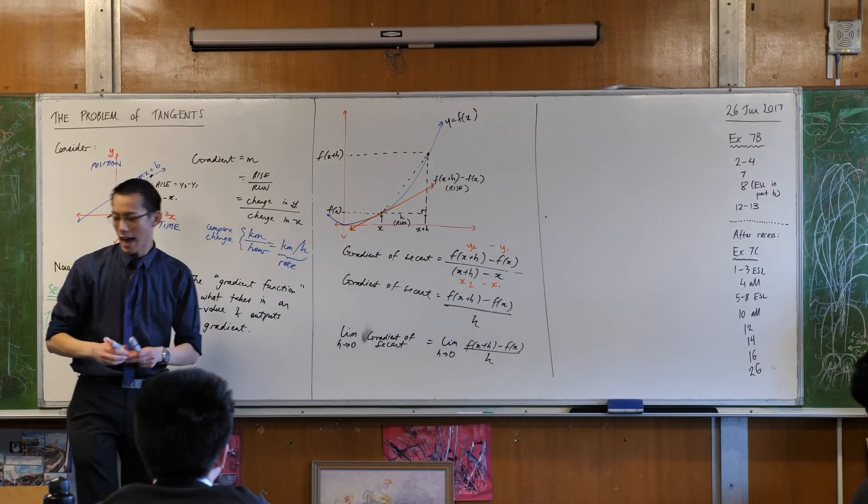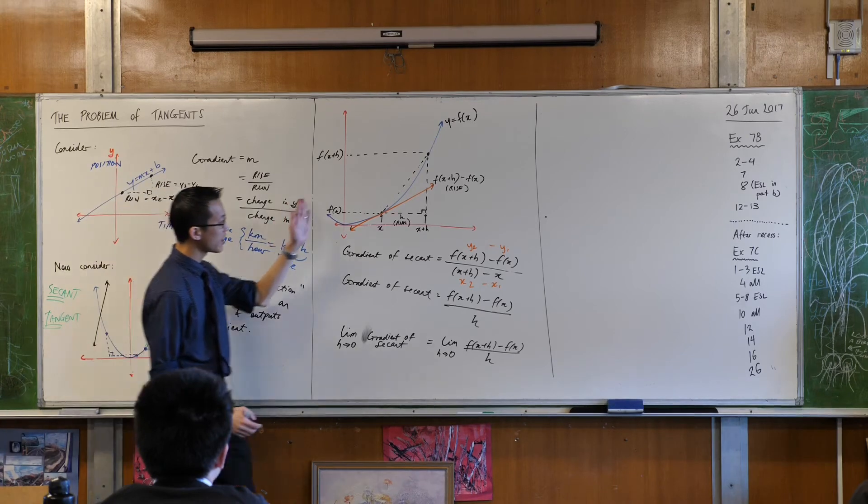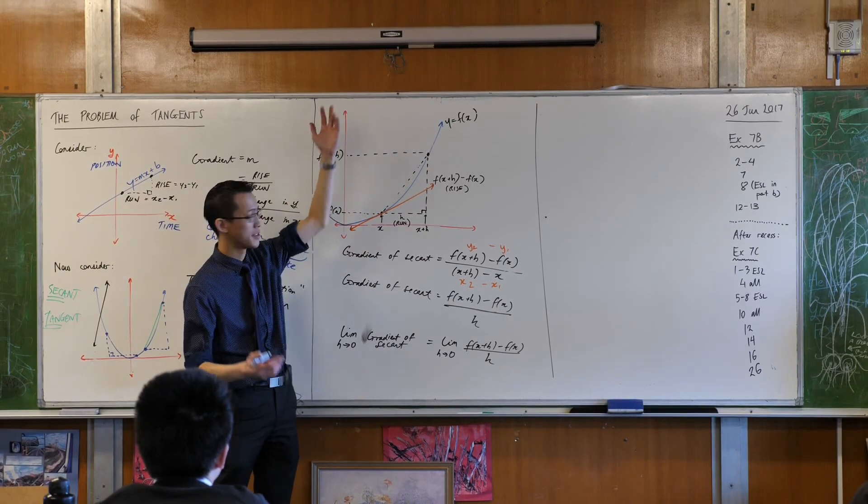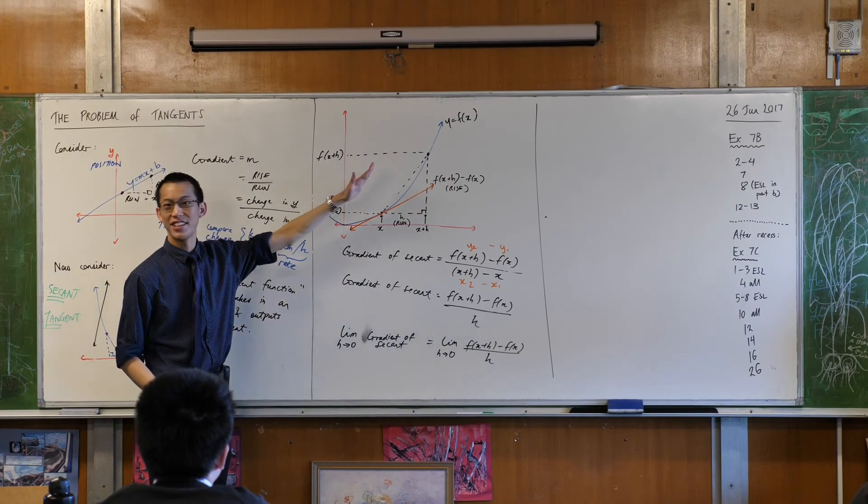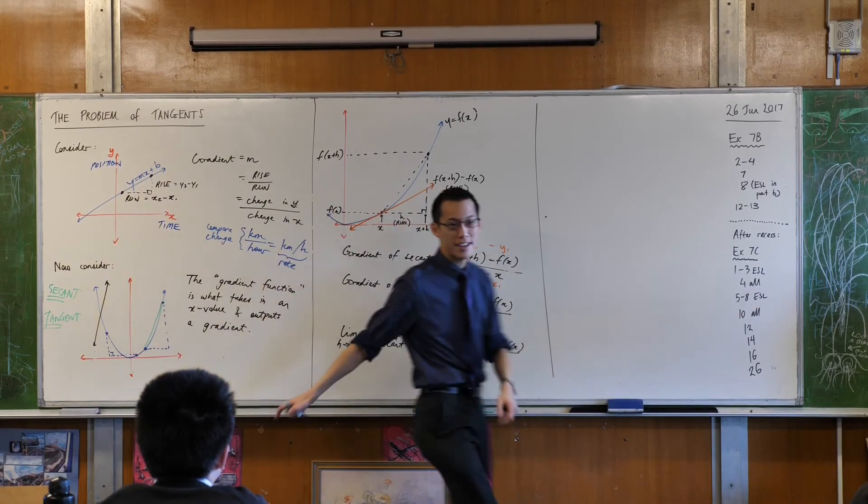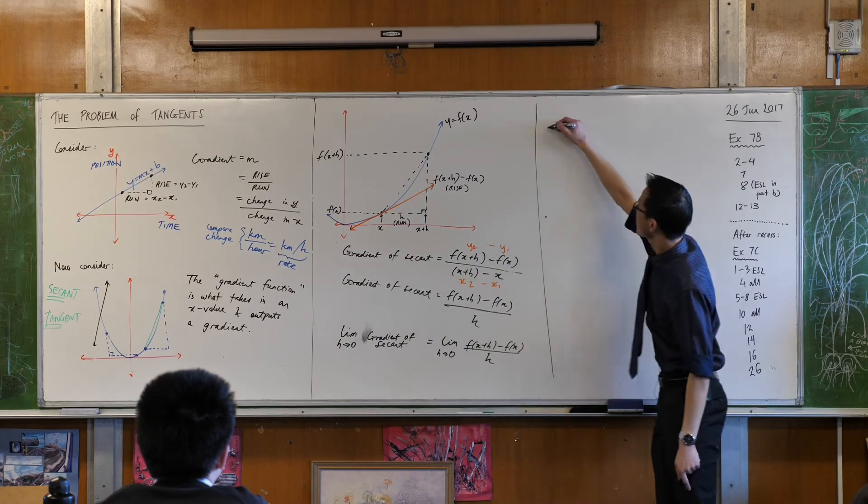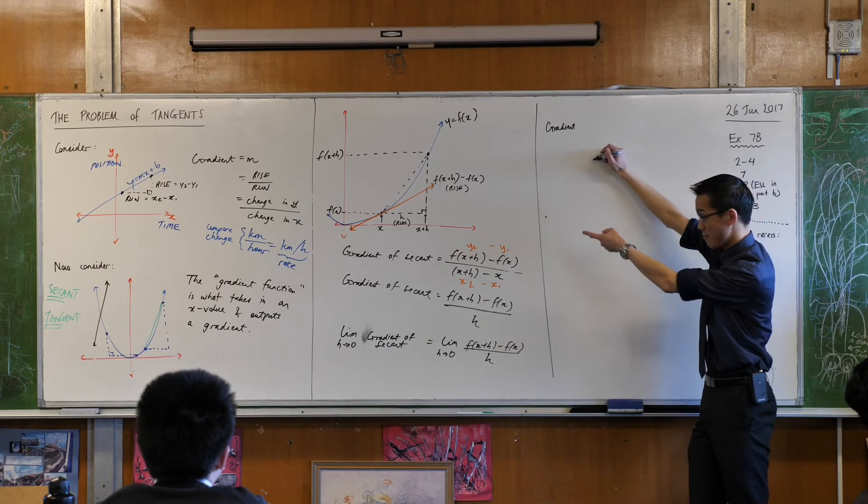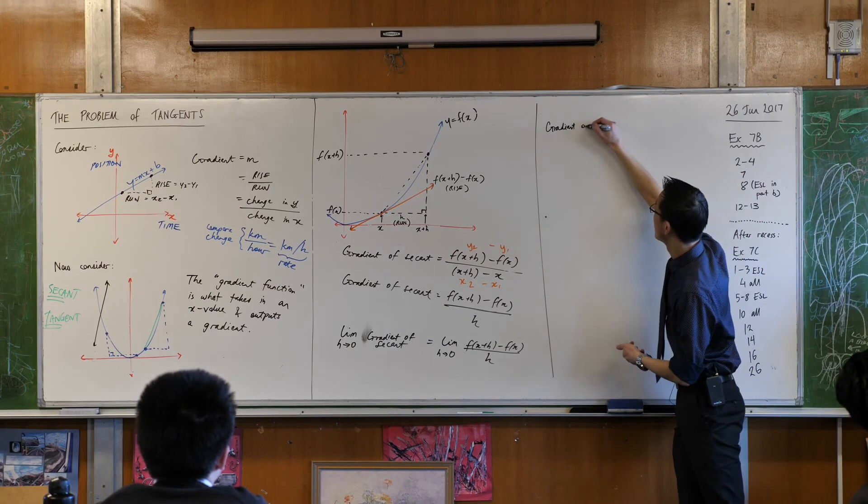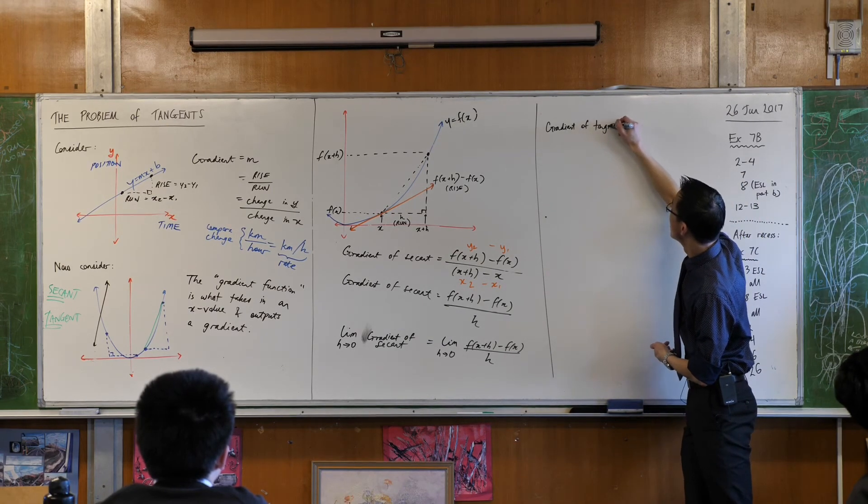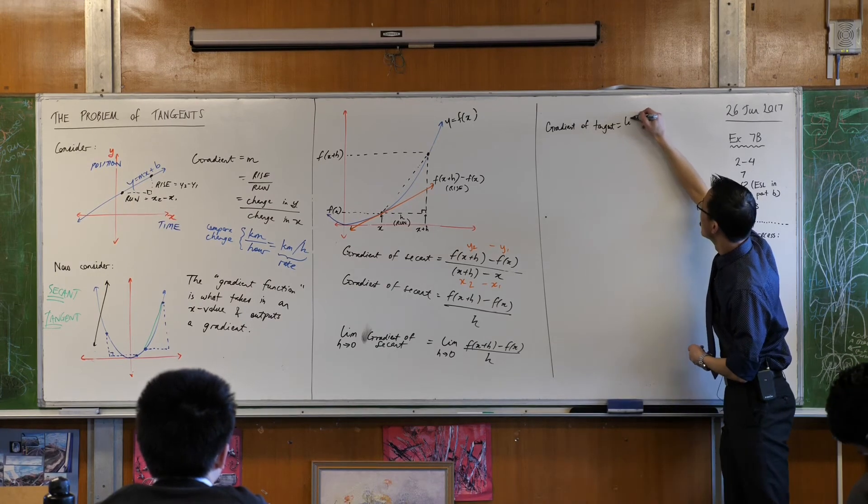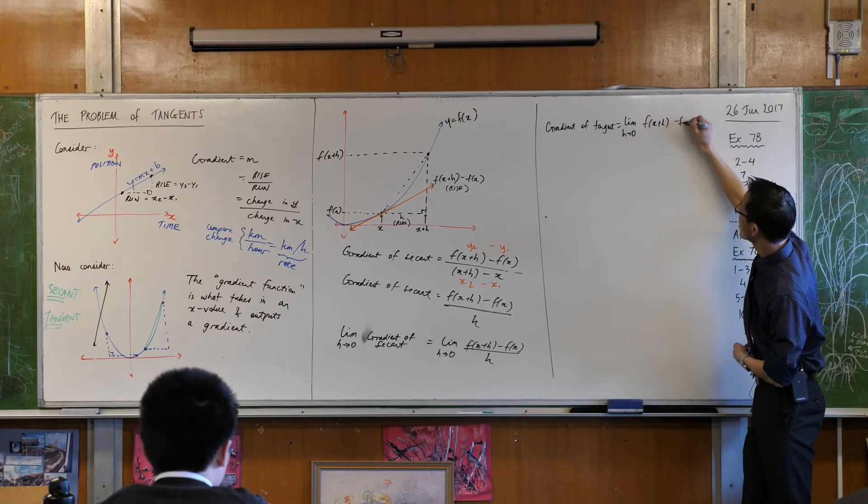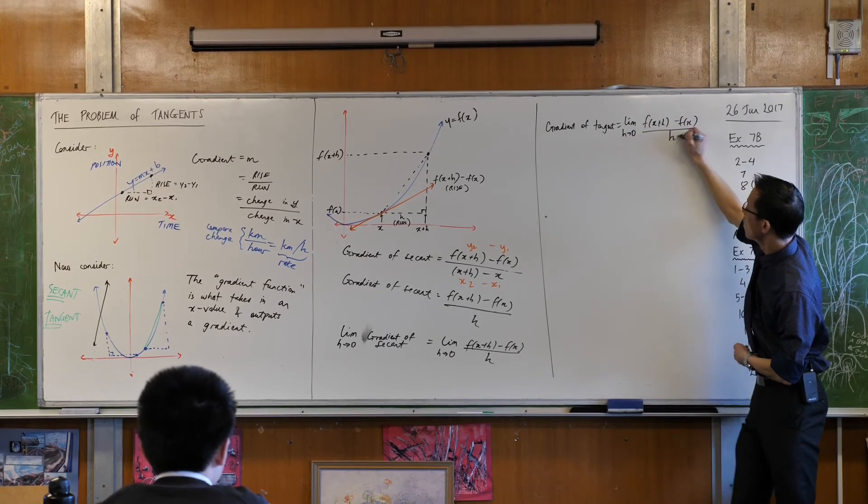And you don't have a secant anymore. It's not cutting across your function twice or more than twice. All it's doing is it's just touching. It's just touching. So in fact, when you take the limit, you have the gradient, not of a secant, but the gradient of that orange line, which is the tangent.